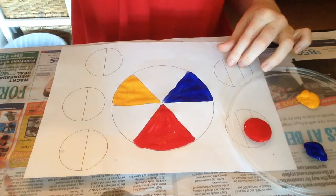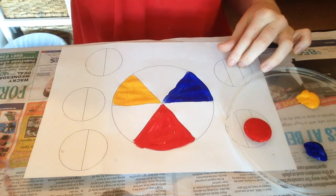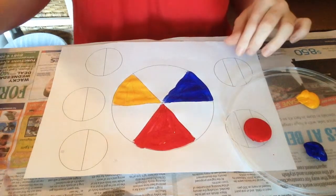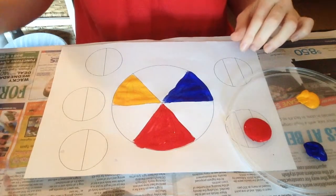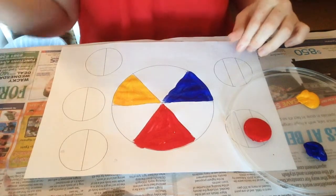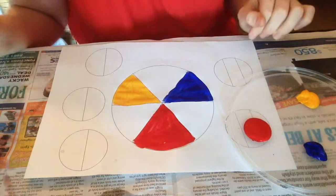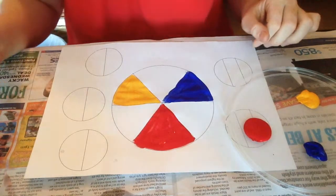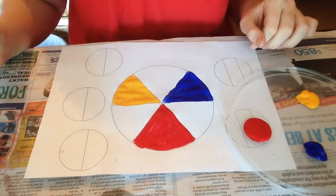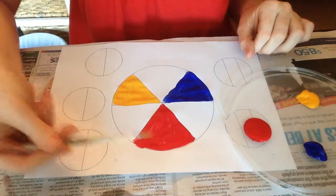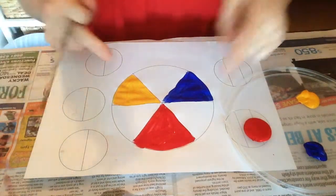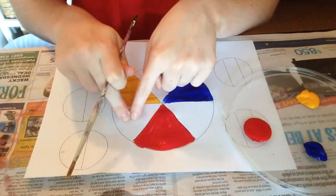Now we are making secondary colors. Secondary colors are made of two primary colors mixed together. The first secondary color we are going to make is orange. Orange is made by mixing red and yellow together. So red plus yellow equals orange in this triangle.